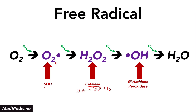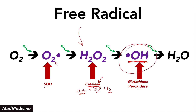Bacteria have catalase as their defense mechanism against our defense mechanism. Our defense mechanism is that we can fight the infection by causing a reaction where hydrogen peroxide is formed to kill off that bacterial cell. But if the bacteria cell has a catalase enzyme — if it is a catalase-positive bacterial cell — they can convert the potentially dangerous hydrogen peroxide simply into water and oxygen and be able to thrive. And finally, glutathione peroxidase plays a role in handling the very dangerous hydroxyl radical.